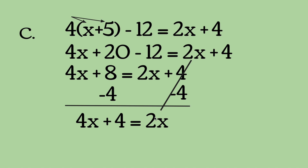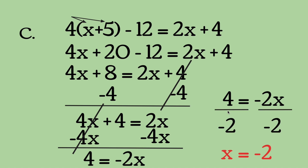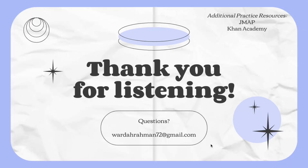Now subtract 4 on both sides, which leaves us with 4x plus 4 equals 2x. Then subtract 4x from both sides — we get 4 equals negative 2x, or negative 2x equals 4. Dividing both sides by negative 2 leaves us with x equals negative 2.